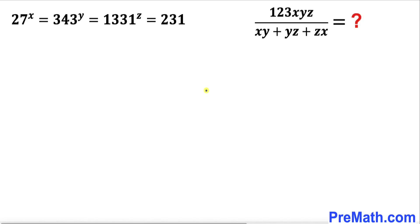Welcome to pre-math. In this video we have the system of equations: 27^x = 343^y = 1331^z = 231, and we are going to find the value of 123xyz divided by (xy + yz + zx).